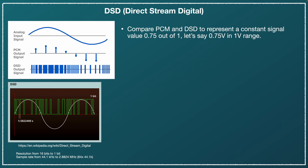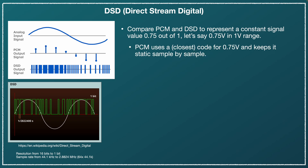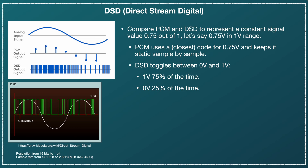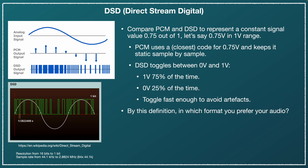Let's take an example. Say we want to represent a value of 0.75 volts in a 1-volt range. With a PCM signal, you take the closest code to 0.75 volts and just keep that static. With DSD, it will toggle between 1 volt and 0 volts such that it's 75% of the time at 1 volt and 25% at 0 volts, switching fast enough that you wouldn't get any artifacts. If you think of it that way, which would you rather have your hi-fi audio signal in? This PDM — which DSD effectively is — is a kind of cheap and dirty way of doing digital audio. It's used when you cannot afford proper conversion and it needs to be very cheap, such as in digital microphones.